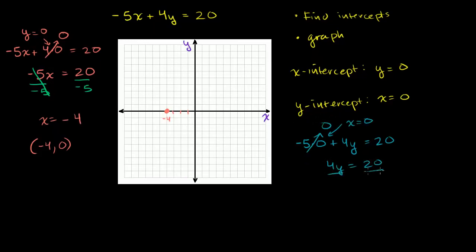We can divide both sides of this equation by 4, to get rid of this 4 right there. And you get y is equal to 20 over 4, which is 5. So when x is equal to 0, y is equal to 5.